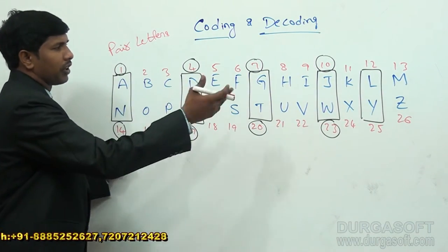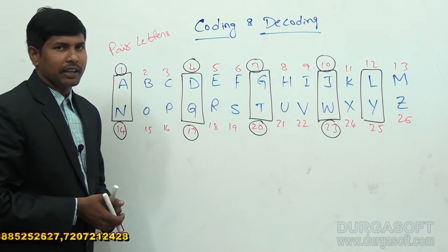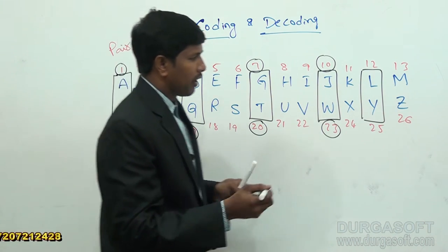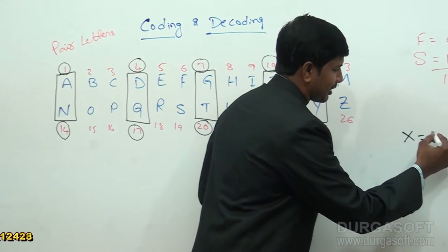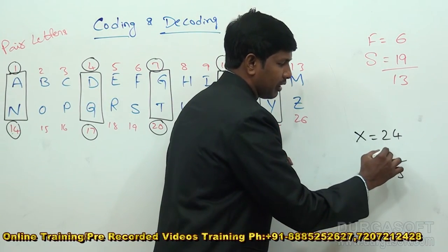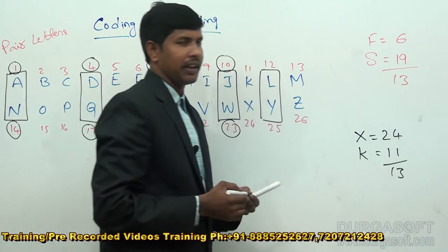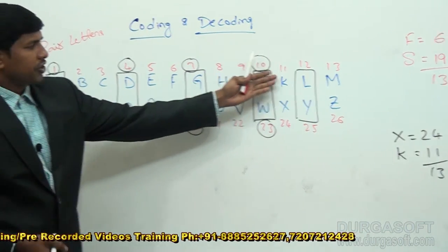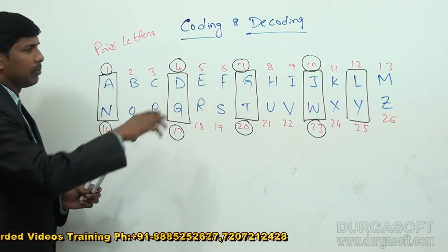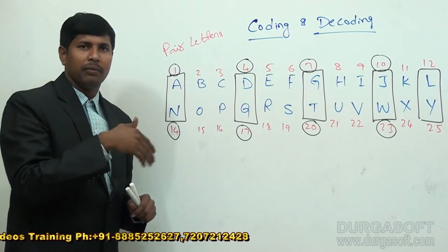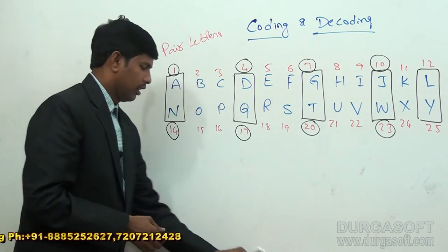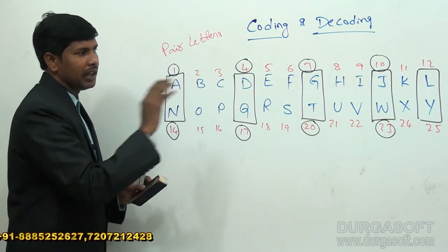Without writing all the alphabets, you can decide the paired letter for any alphabet using this logic. For example, the paired letter of X: X value is 24, subtract 13 to get 11, and the 11th letter is K. So you can find paired letters for any alphabet using the difference of 13.